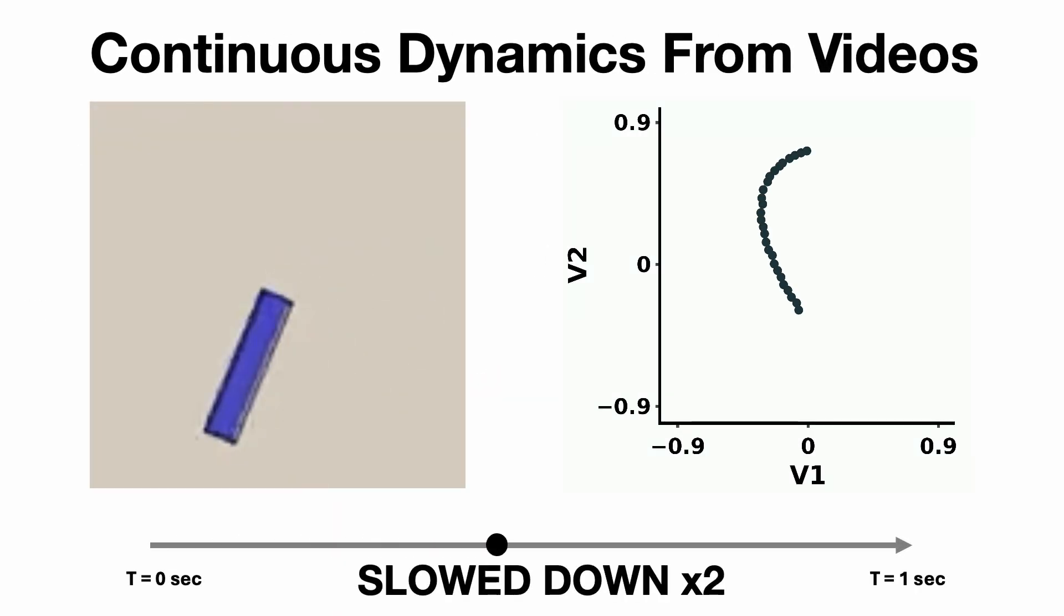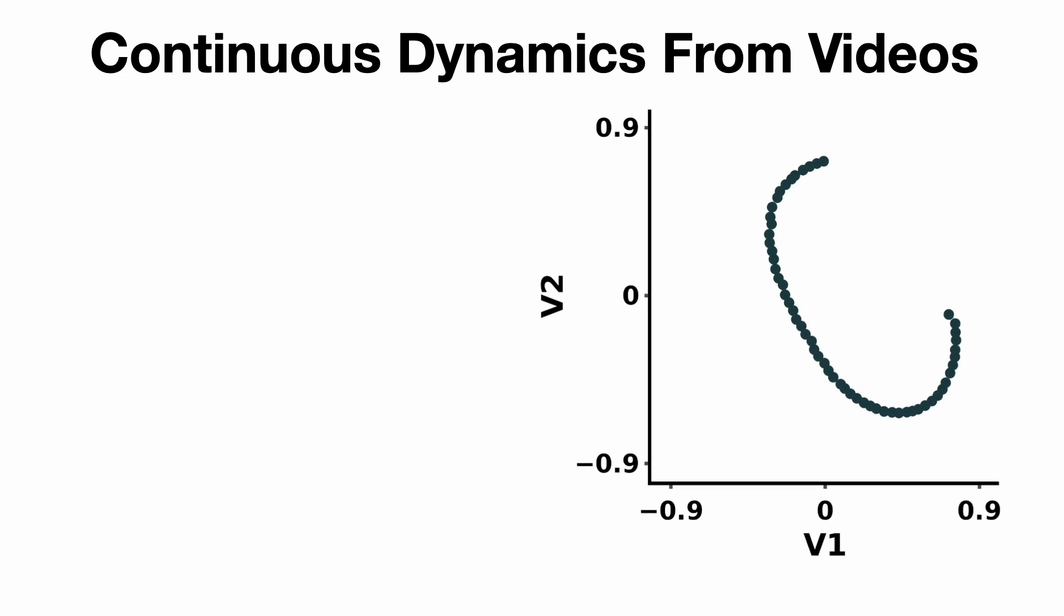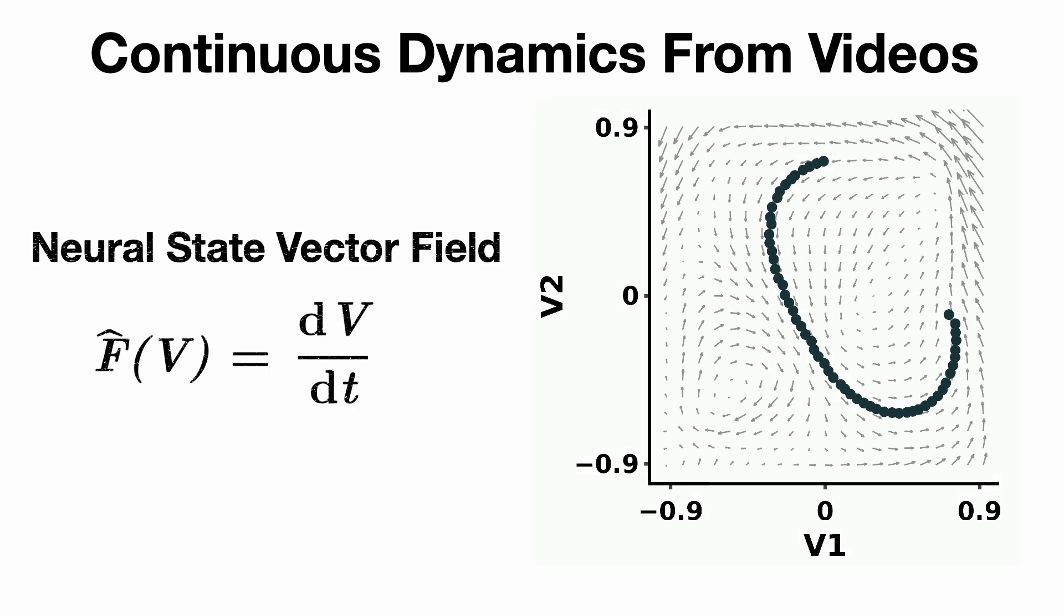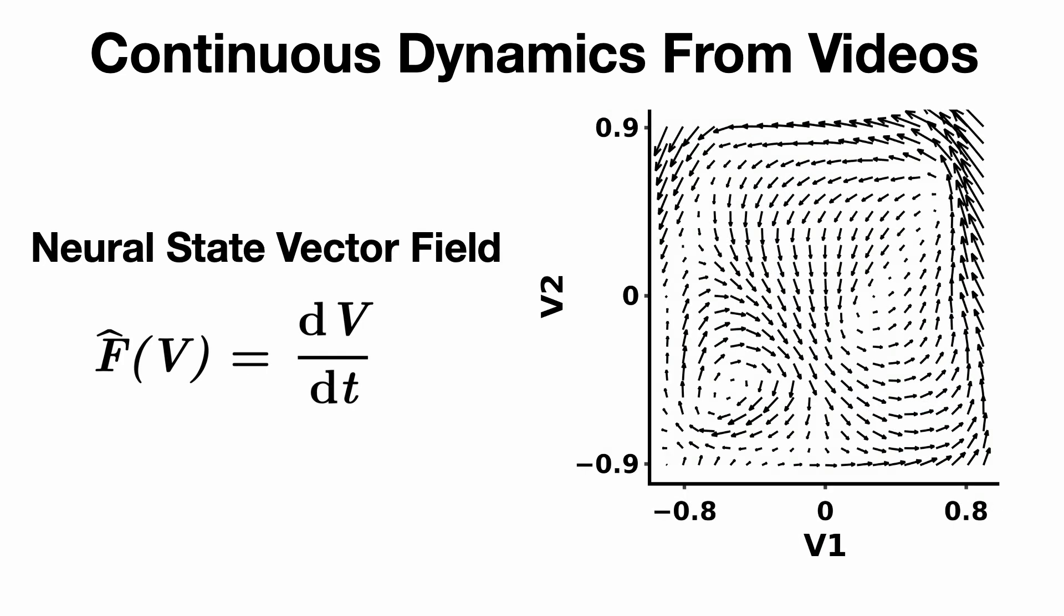From these smooth trajectories, we train a neural network to describe the system dynamics evolution, which we call a neural state vector field. The neural state vector field represents the instantaneous rate of change of the smooth neural state variables depending only on the current state.